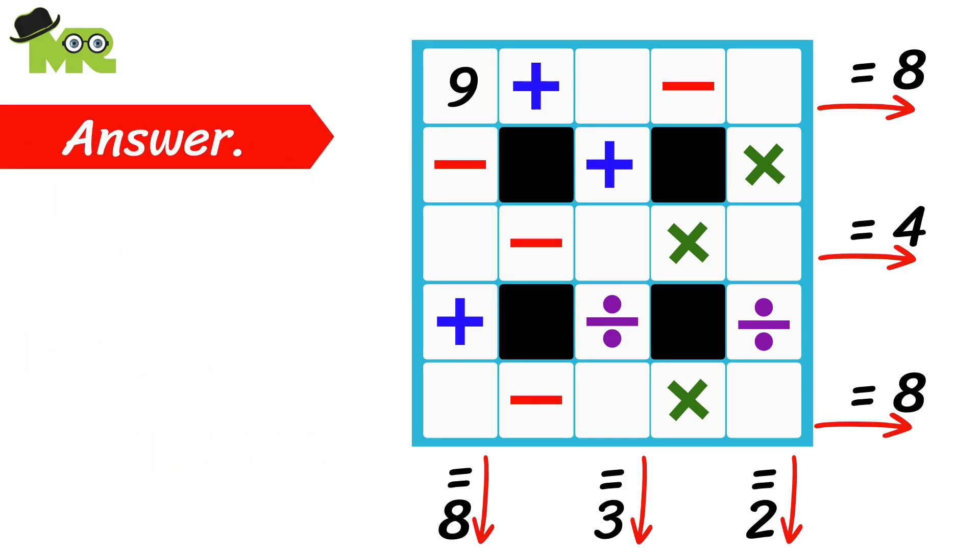Place number 9 in this box, 7 here, and 8 here. 9 plus 7 is 16 and 16 minus 8 equals 8. Now place 6 in here, 2 here, and 1 in here. 6 minus 2 is 4 and 4 multiplied by 1 is equal to 4.